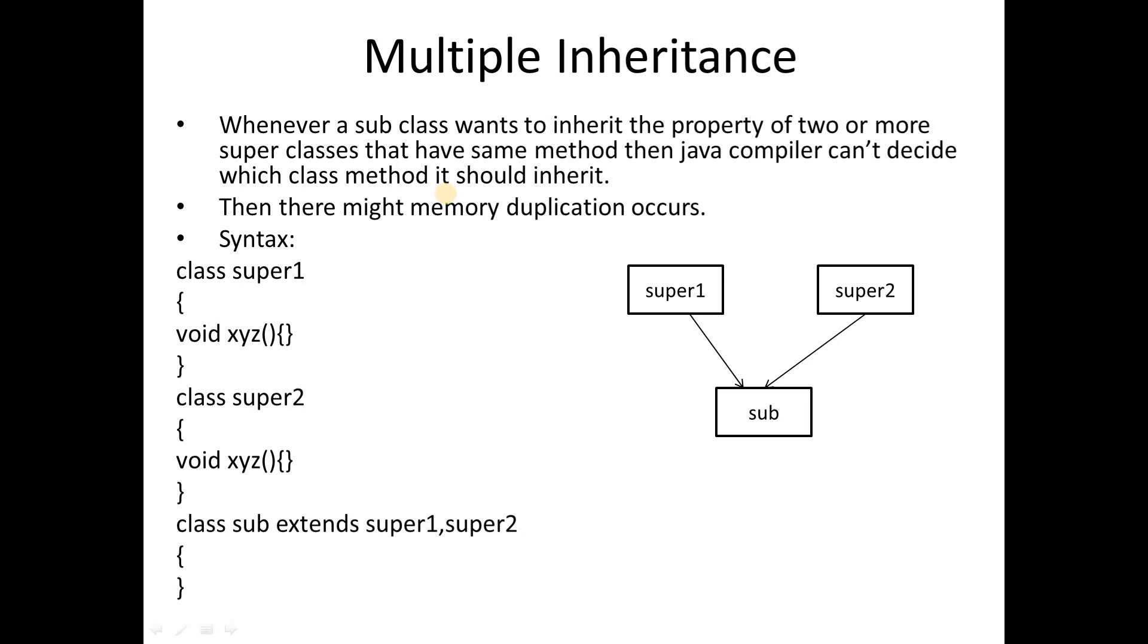The compiler can't decide which class method should be inherited, and that's why memory duplication occurs. A problem of ambiguity is generated. This is the reason why multiple inheritance is not supported by Java.